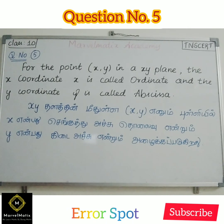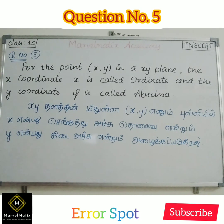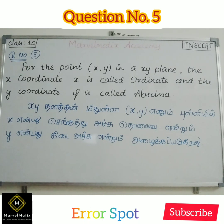Fifth question — the final question: For the point (x, y) in the XY plane, the x-coordinate is called the ordinate and the y-coordinate is called the abscissa. Now it's your time to spot the errors.